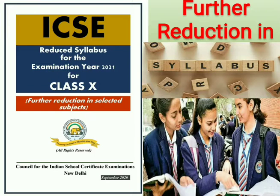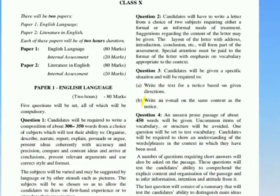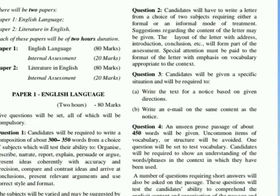In this video, we will be discussing about the reduced syllabus of English for class 10th. We know that in English we have two papers. Paper 1 is related to English Language and Paper 2 is Literature in English. The marking pattern remains the same — the theoretical paper is of 80 marks and 20 marks will be for internal assessment in both papers.